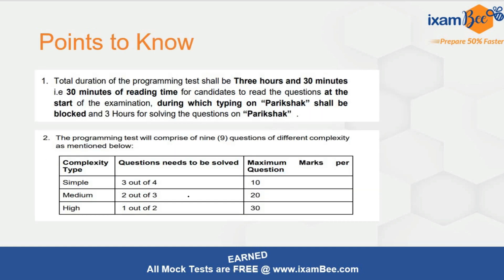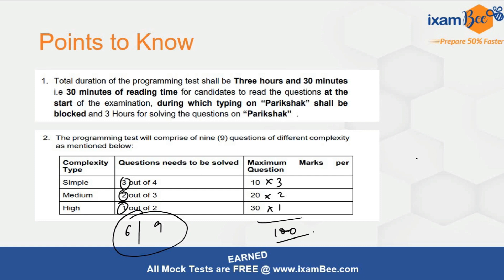How many questions are there? There will be a total of nine questions and you have to attempt only six: three out of four, two out of three, and one out of two. So three simple questions, two medium questions, and one high level question. The marking is 10 multiplied by 3, 20 multiplied by 2, and 30 multiplied by 1, giving you a hundred marks. The entire time will be 3 hours.